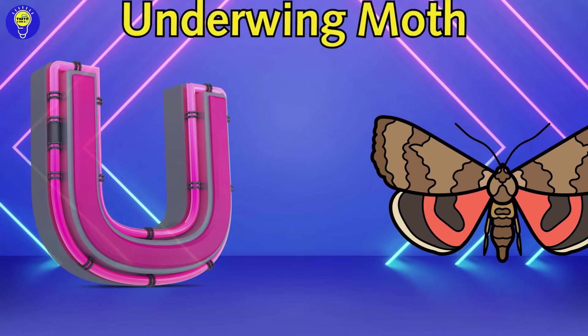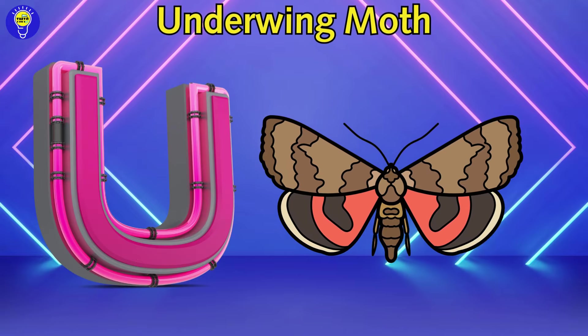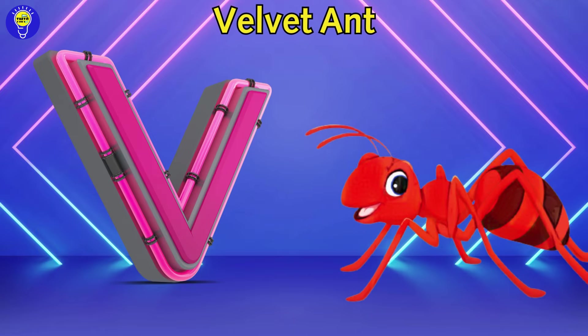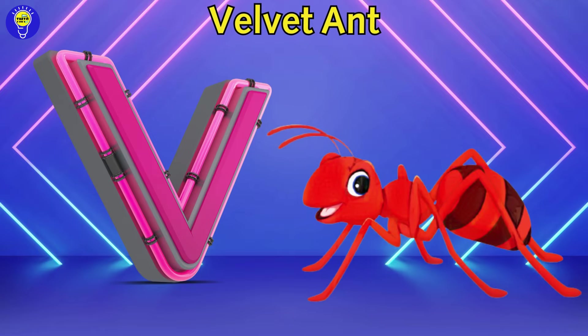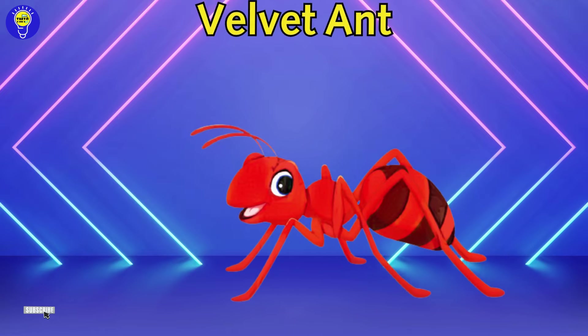U is for underwing moth. u, underwing moth. V is for velvet ant. v, velvet ant.